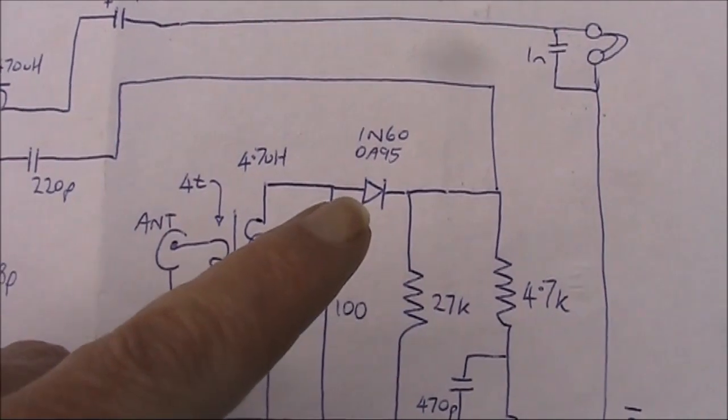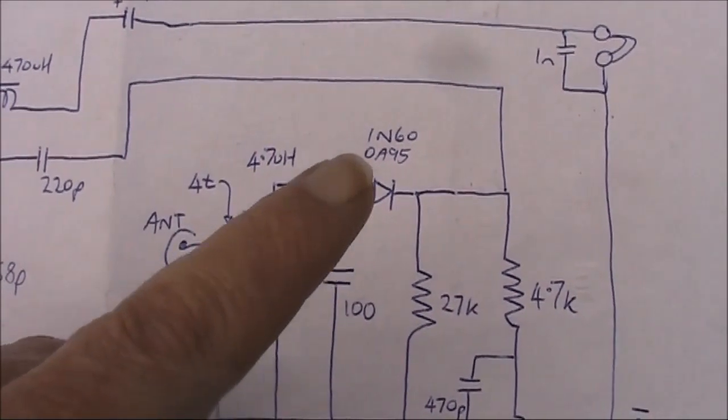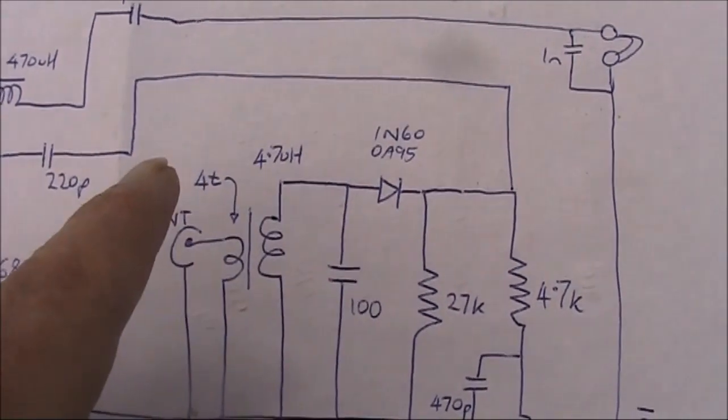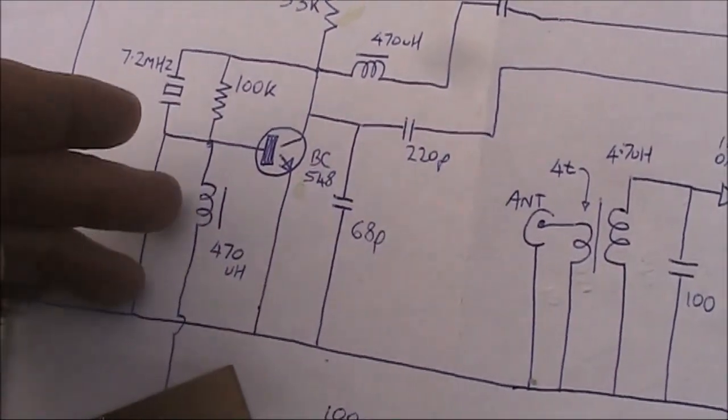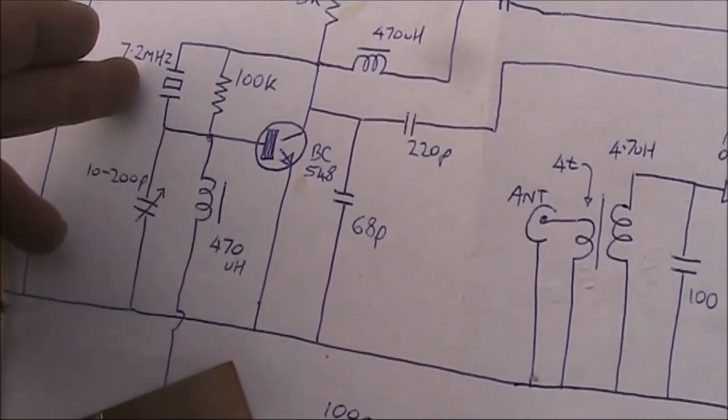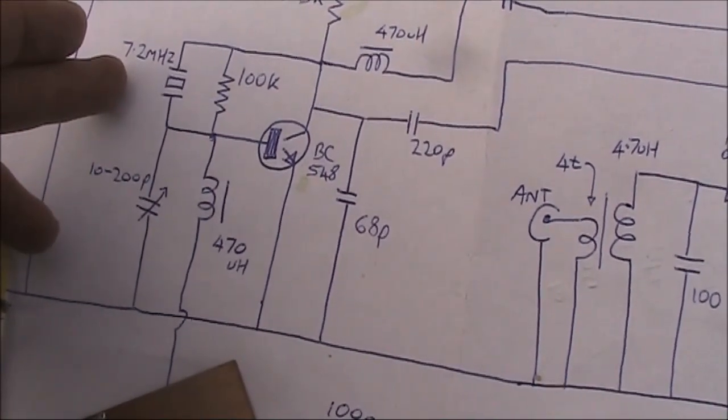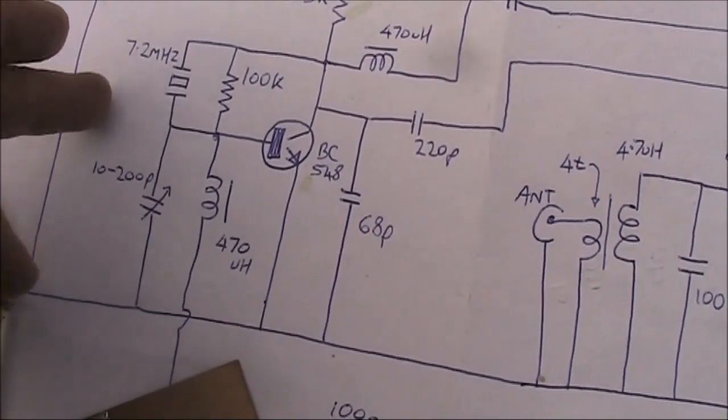For this to detect SSB, you need a signal on 7MHz coming from the local oscillator, which is this transistor here. You could use a crystal, but I'm using a ceramic resonator on 7.2MHz.